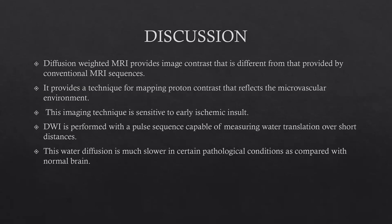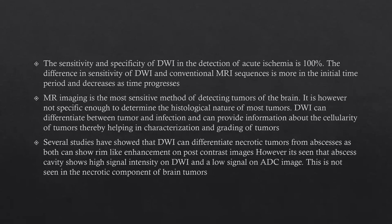Discussion. DWI-MRI provides image contrast different from conventional MRI sequences and provides a technique for mapping proton contrast that reflects the microvascular environment, making it sensitive to early ischemic insult. DWI is performed with a pulse sequence capable of measuring water translation over short distances; water diffusion is much slower in certain pathological conditions compared with normal brain. The sensitivity and specificity of DWI in detection of acute ischemia is 100%. The difference in sensitivity between DWI and conventional MRI sequences is greater in the initial time period and decreases as time progresses, hence no diffusion restriction is seen in chronic infarcts.